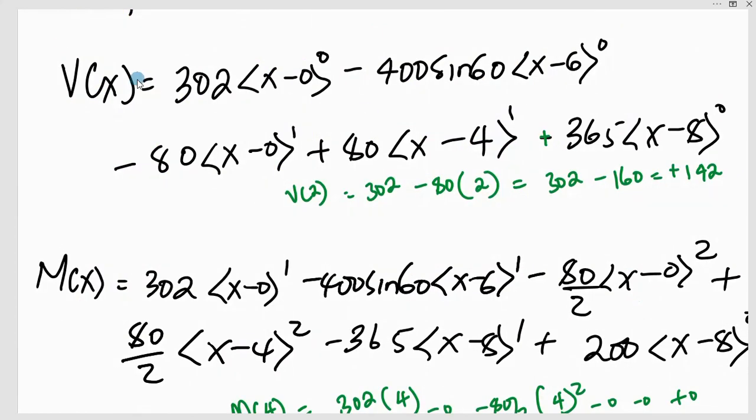This is the shear force function written in form of singularity functions. We have V(x) = 302 angle bracket x minus 0 to power 0 minus 400 sine 60 angle bracket x minus 6 to power 0 minus 80 angle bracket x minus 0 to power 1, plus 80 angle bracket x minus 4 to power 1, plus 365 angle bracket x minus 8.